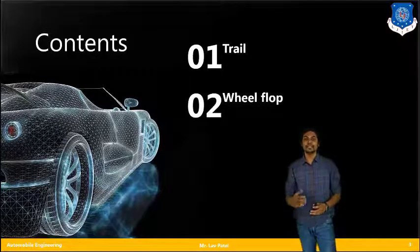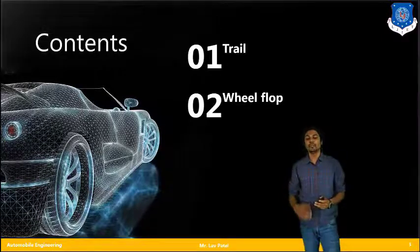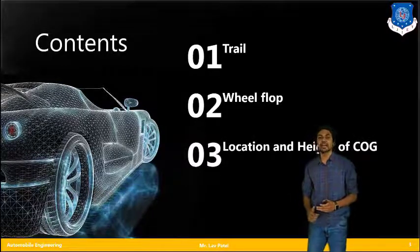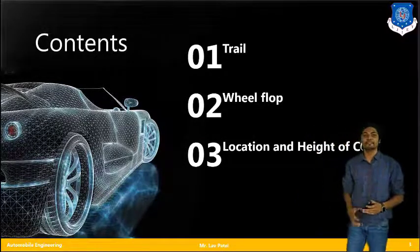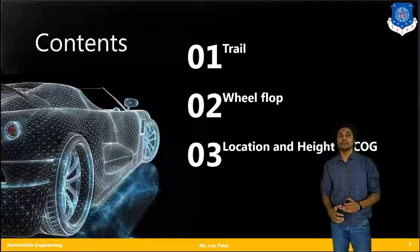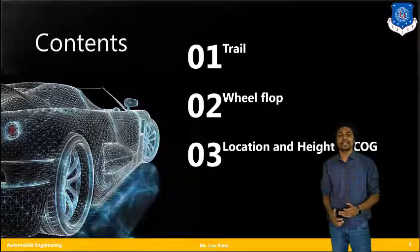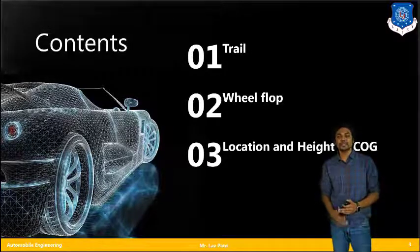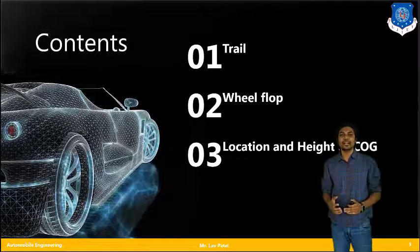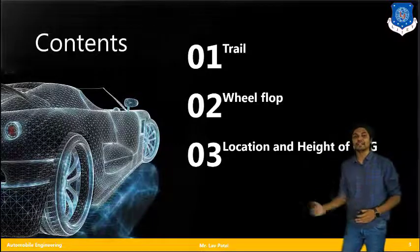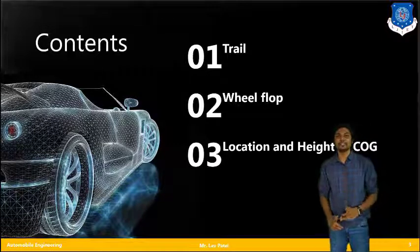The second topic is wheel flop — that is the condition while the vehicle is in moving condition, specifically for two-wheelers. The third one is the location and height of the center of gravity. When the vehicle is in moving condition, there are several maneuvers performed while driving a motorcycle: acceleration, braking, turning, and cornering. These different maneuvers are going to affect the overall center of gravity, and it is going to shift in different maneuvers. We will learn that in the third topic: location and height of center of gravity.